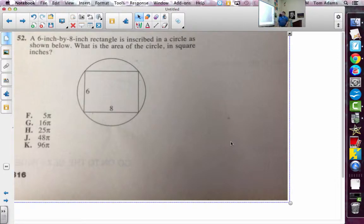Okay, for problem 52, it says a 6 by 8 inch rectangle is inscribed in a circle as shown below. What is the area of the circle in square inches?